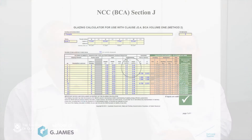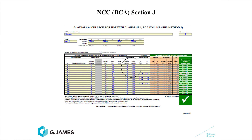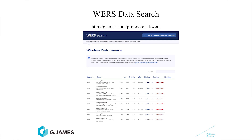The Section J calculator is something every architect should understand and have a play with. It's a free download from the NCC's website, and it allows you to make an informed decision rather than just passing it off to a consultant. The data for this table can be sourced from G. James' website for the various window framing types and glass options.